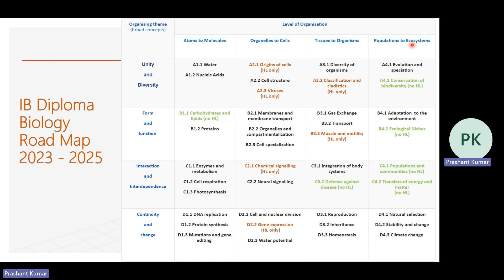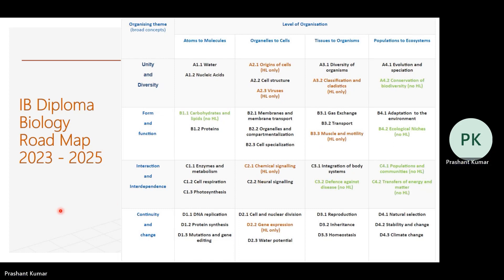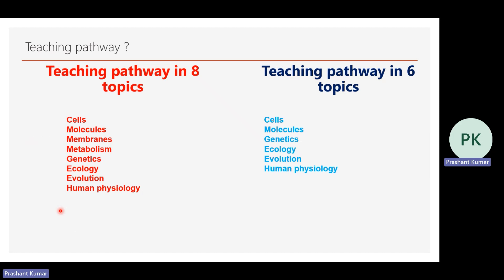I have discussed two ways to go ahead with the topics in the syllabus. There is a slight difference in SL and HL portions — points that are HL only are taught exclusively to HL students, and the rest are common for both SL and HL. So for teaching pathways, I have made two options: first is an eight-topic pathway starting with cells, molecules, membrane, metabolism, genetics, ecology, evolution, and human physiology; whereas in the six-topic pathway I have customized the topics into cells, molecules, genetics, ecology, evolution, and human physiology.